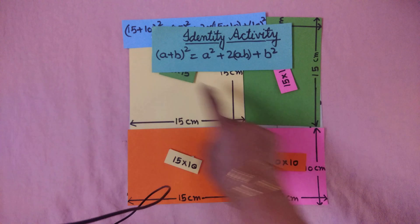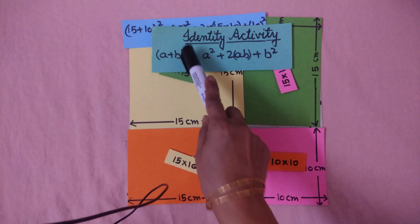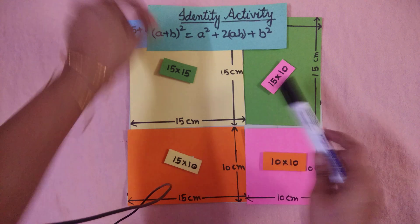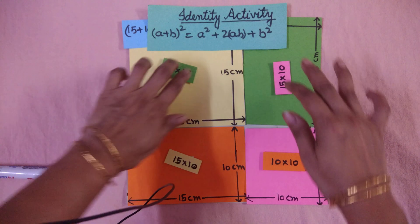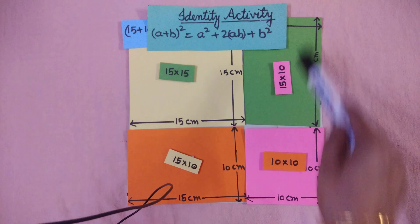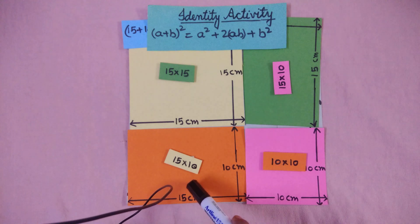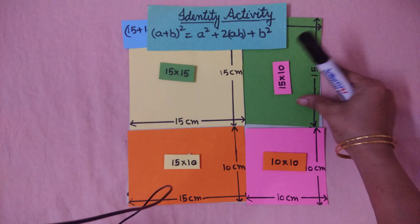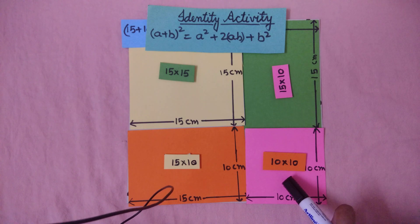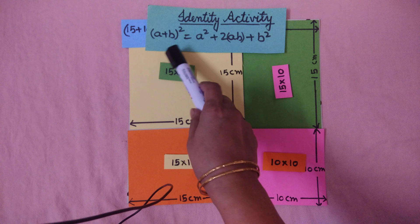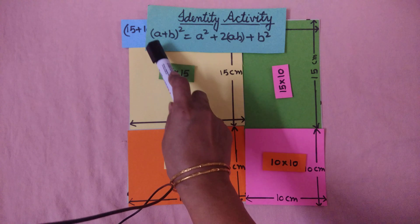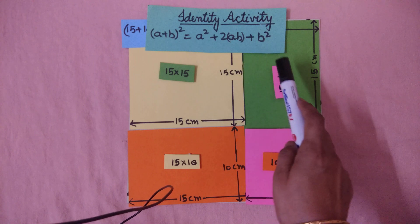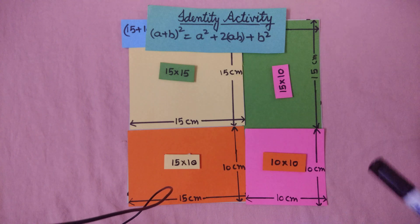So with this activity we have got the first identity: (a + b) whole square equals a squared — that is the 15 by 15 piece — plus 2ab, which are the 2 rectangular pieces of a times b, plus b squared, which is the 10 by 10 piece. We have learnt that (a + b)² = a² + 2ab + b².